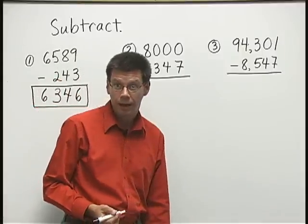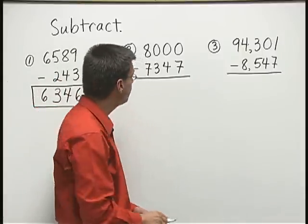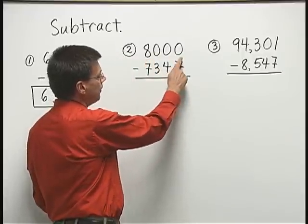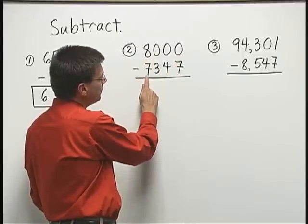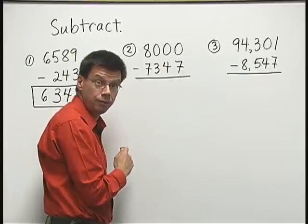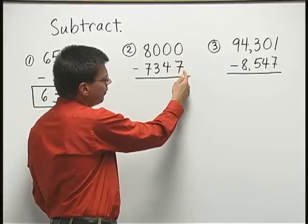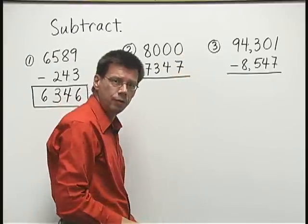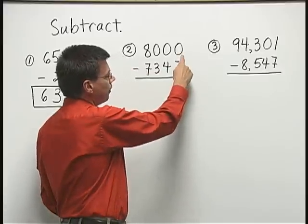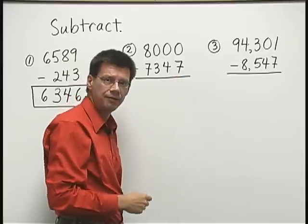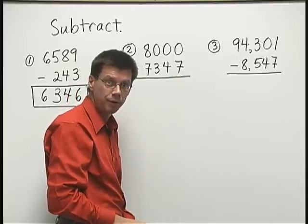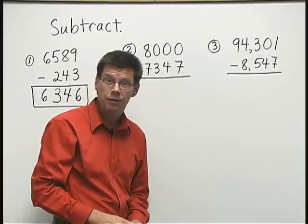Now let's take a look at number two. In number two, we want to take 8,000 minus 7,347. If we want to start in the ones place here, we're trying to take zero minus seven. We're trying to take seven ones away from zero. We can't do that.